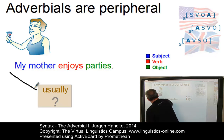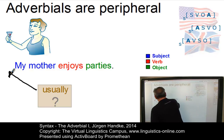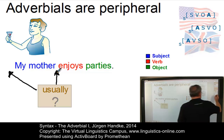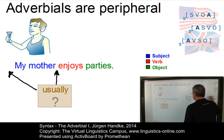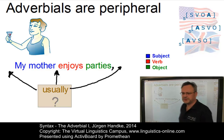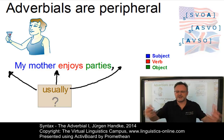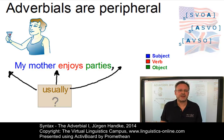We can insert it at the beginning of the sentence: 'Usually, my mother enjoys parties.' We can insert it between the subject and the verb: 'My mother usually enjoys parties.' Or, if we add a comma and insert an intonational break, we can also put it at the end: 'My mother enjoys parties, usually.' Most adverbials are like 'usually' — both optional and mobile.